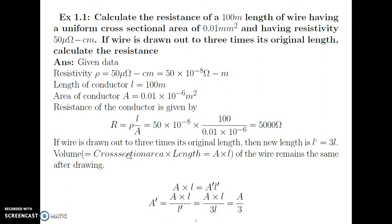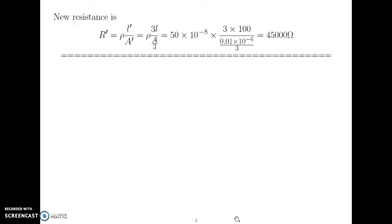Volume equals cross sectional area into length, that is A into L. Before drawing, volume is A into L. After drawing the wire to 3 times its original length, the new area will be A' and the new length will be L'. So A' into L' equals A into L. Substituting L' as 3L, the L terms cancel and A' equals A divided by 3.